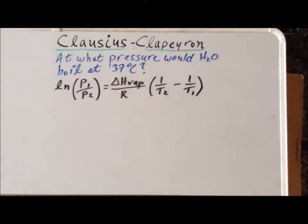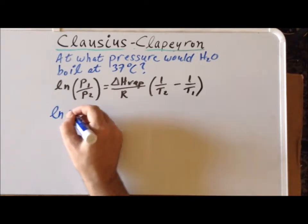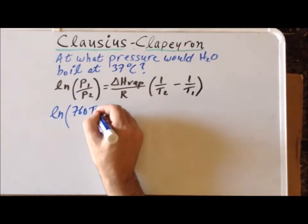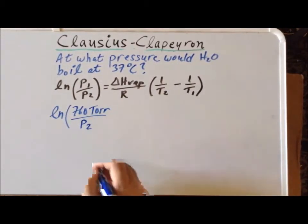Now we can begin to substitute into the equation. On the left hand side, we have the natural log. We know the pressure 1 is 760 torr. And the secondary pressure, P2, is to be determined.